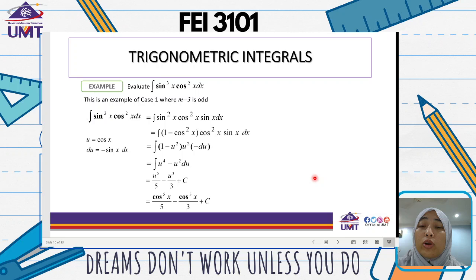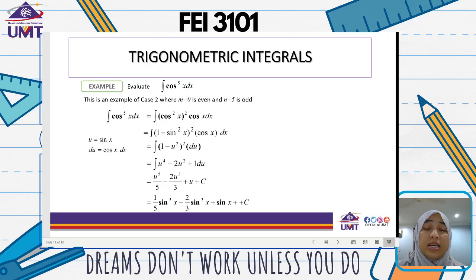Now evaluate the integration of cos to the power of 5x dx. This is an example of Case 2, where m equals 0, which is even, and n equals 5, which is odd. We split cos to the power of 5x into cos squared x squared times cos x dx. Then we substitute 1 minus sin squared x for cos squared x.